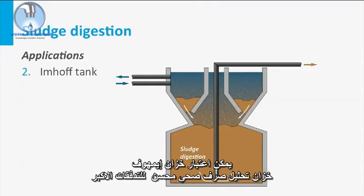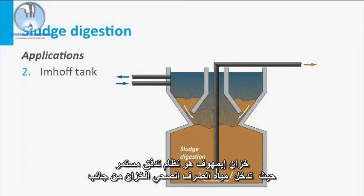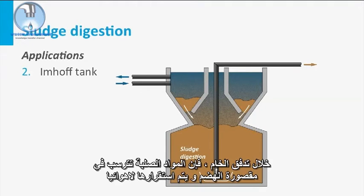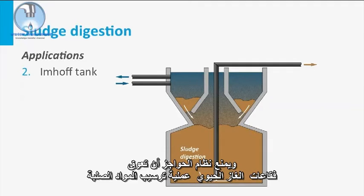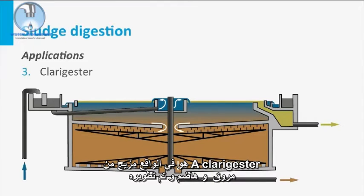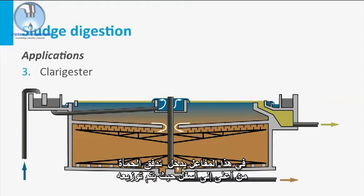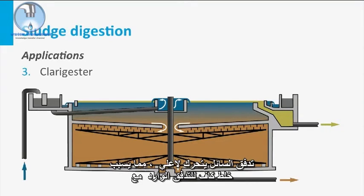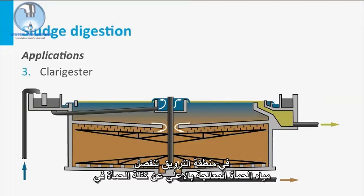The Imhof tank can be considered an improved septic tank for larger flows. It is a continuous flow system in which sewage enters the tank at one side and leaves at the other. During the lateral flow, solids settle to the digestion compartment and are anaerobically stabilized. A bevel system prevents the bubbling biogas from disturbing the solids settling process. The upper compartment can be regarded as a primary clarification zone. A clarygester, developed in South Africa, is a combination of a clarifier and a digester. In this reactor, the sludge flow is introduced from top to bottom, the liquid flow is upward, causing adequate mixing with the active methanogenic biomass, and a clarification zone separates the treated sludge water from the sludge mass in the lower compartment.